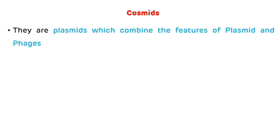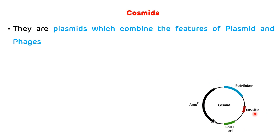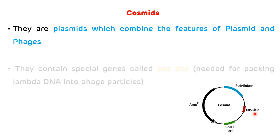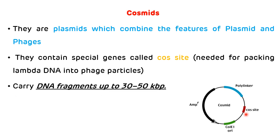Cosmids are plasmids which combine the features of plasmids as well as bacteriophages. This is the structure of cosmids, which have combined features of plasmids as well as phages. They contain special sequences called cos sites, which are needed for packing lambda DNA into phage particles. They can carry or transfer DNA fragments of 30 to 50 kilobase pairs.